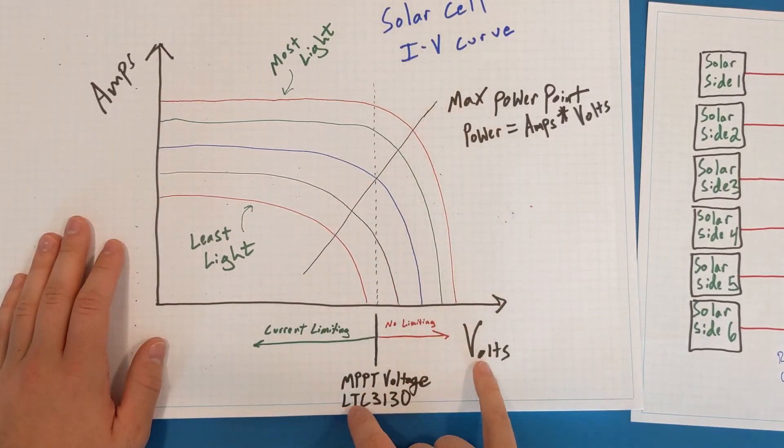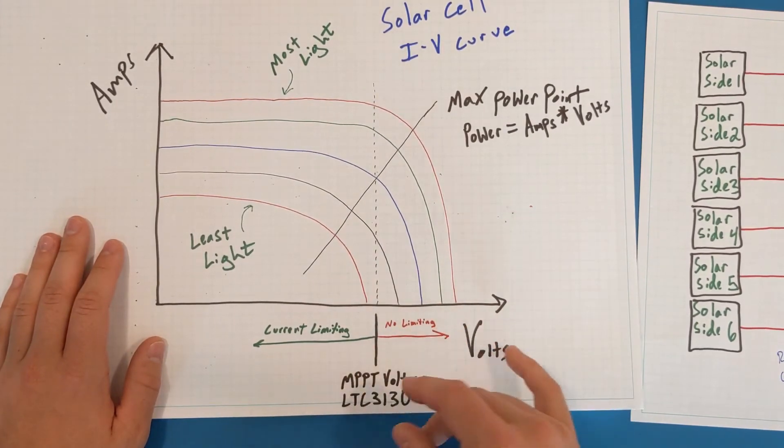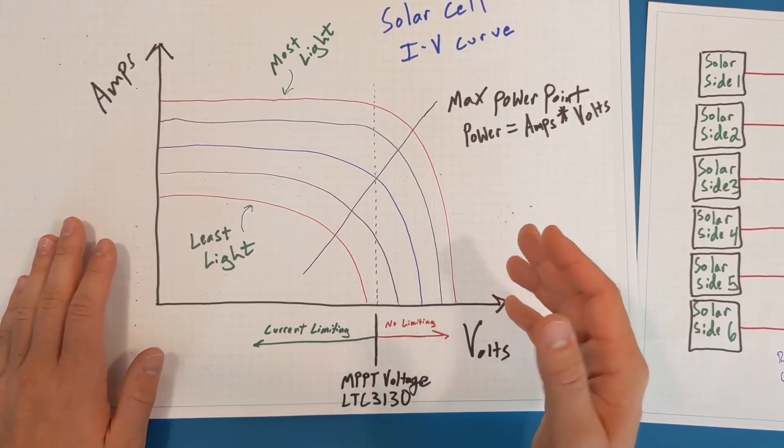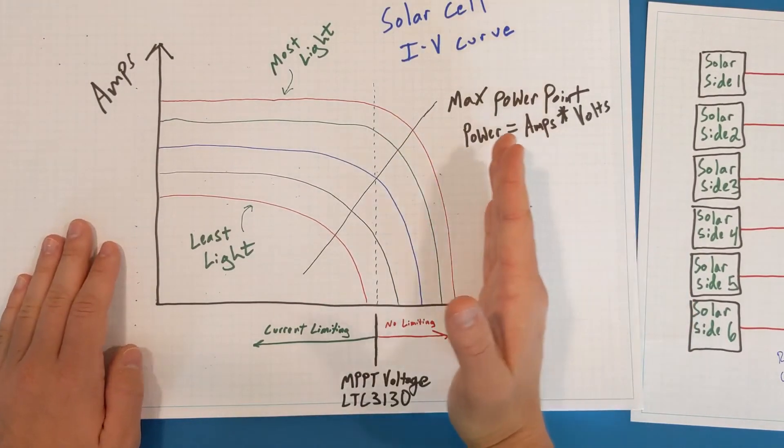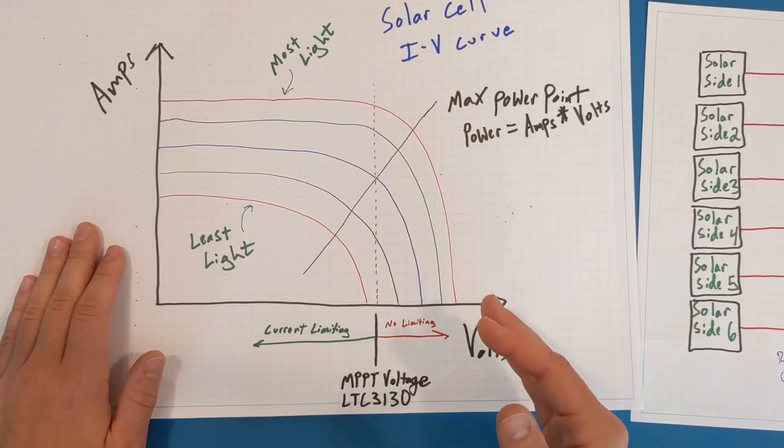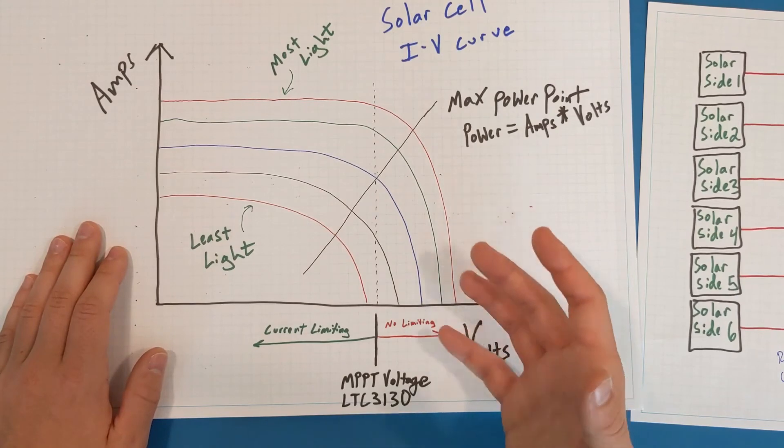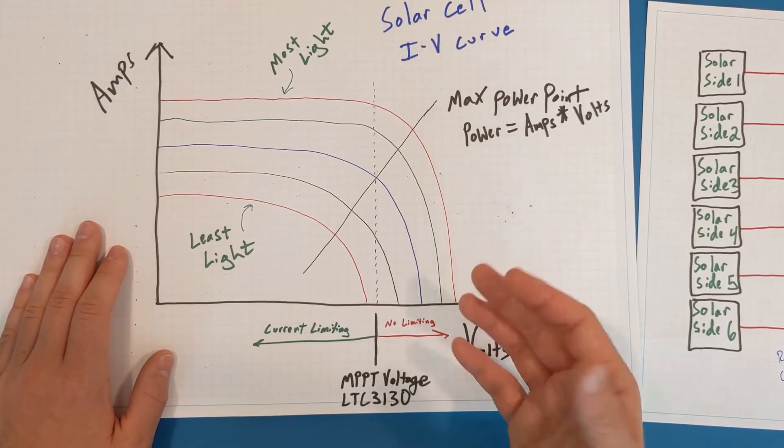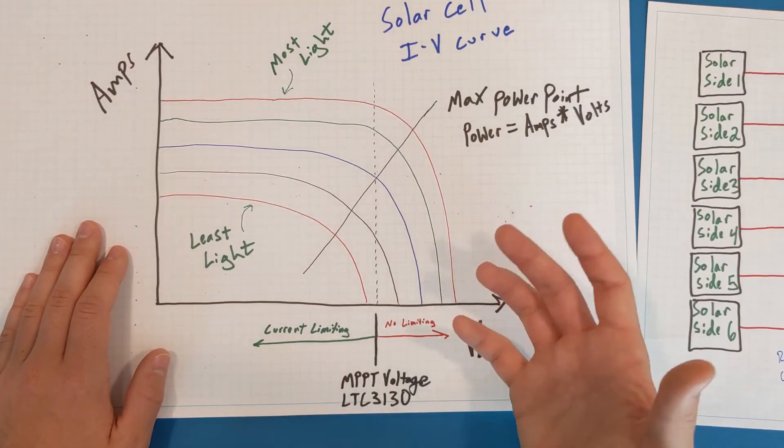The disadvantage of the LTC3130 is that it doesn't provide a more advanced maximum power point tracking or control algorithm, where a better algorithm would scan the entire range of inputs to actually find the maximum amount of power that a given solar cell input could generate. That's the more advanced feature that I would have liked to have.